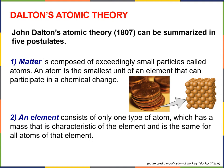More than 2,000 years after the Greeks, modern atomic theory was developed. In 1807, a scientist named John Dalton proposed five postulates about what came to be known as atomic theory. The first postulate is: matter is composed of exceedingly small particles called atoms. The word atom comes from atomos, the Greek word developed by Leucippus and Democritus. An atom is the smallest unit of an element that can participate in a chemical change.